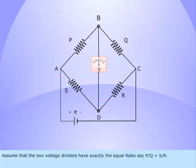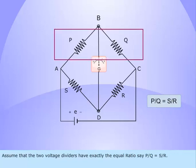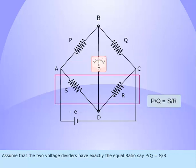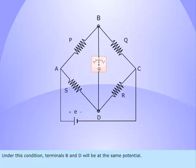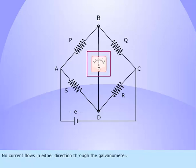Assume that the two voltage dividers have exactly the equal ratio, say P by Q equals S by R. Under this condition, terminals B and D will be at the same potential. Then the bridge is said to be balanced. No current flows in either direction through the galvanometer.